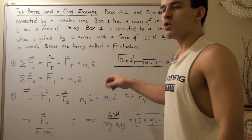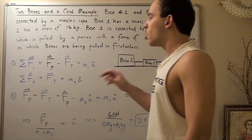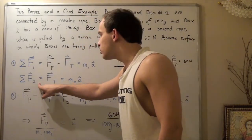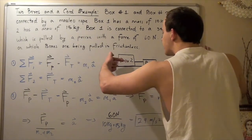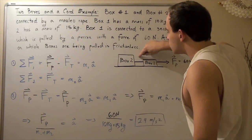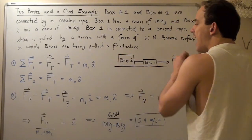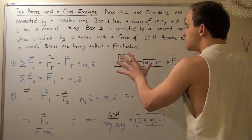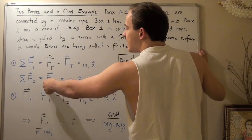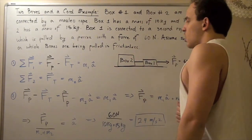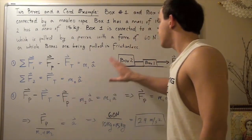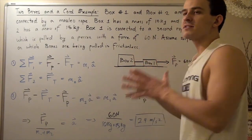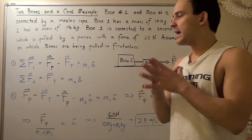Now let's find all the forces acting on box number 2. The sum of all forces acting on box number 2: the tension in the rope is pulling box number 2 in the positive direction, and that's the only force being applied to this object. So the tension F subscript T equals the mass of object 2 multiplied by the same acceleration, because both boxes are accelerating at the same magnitude.